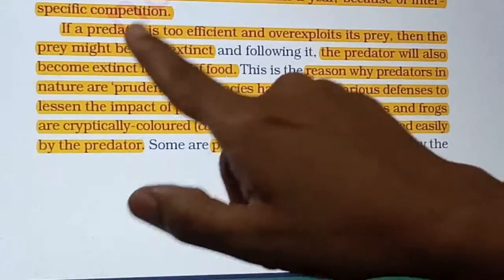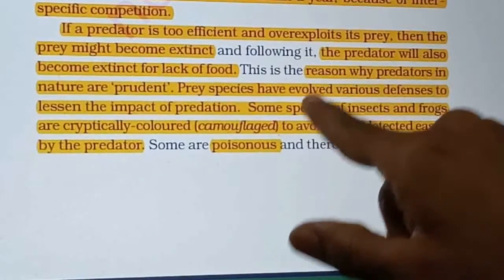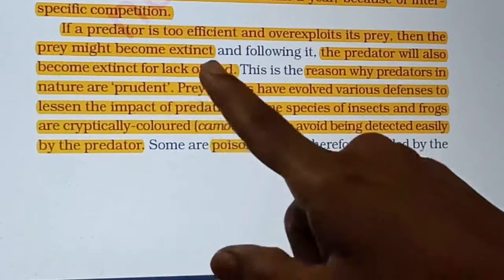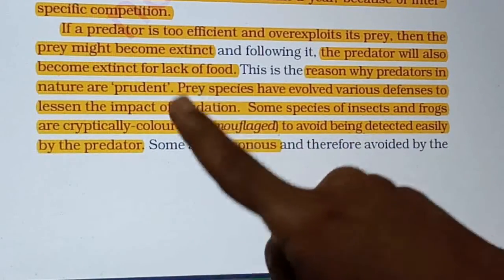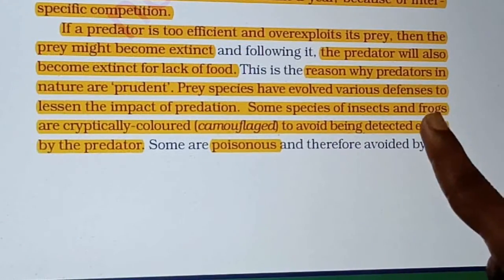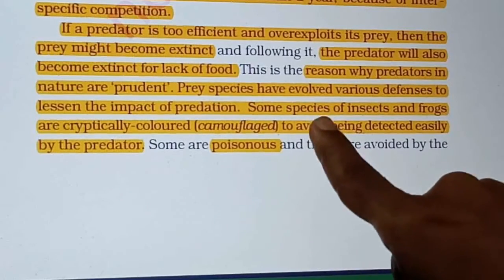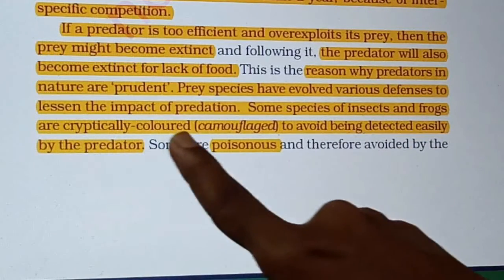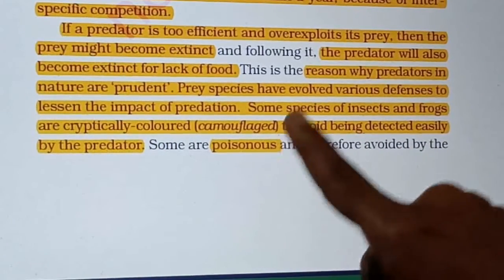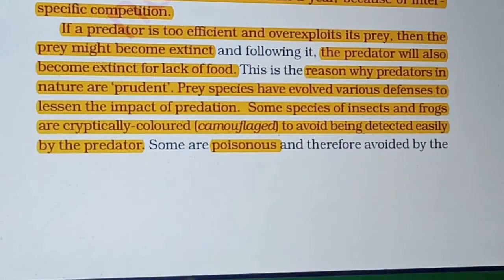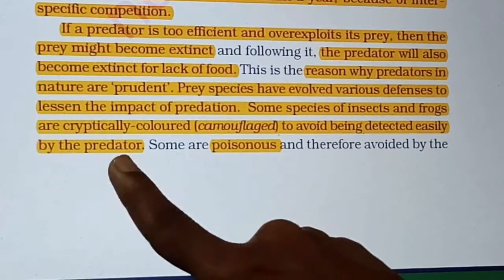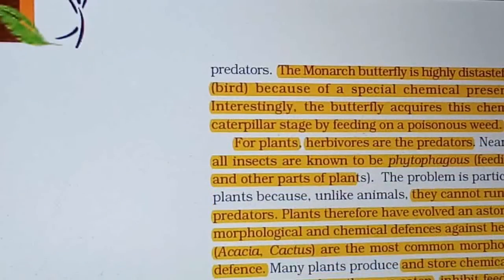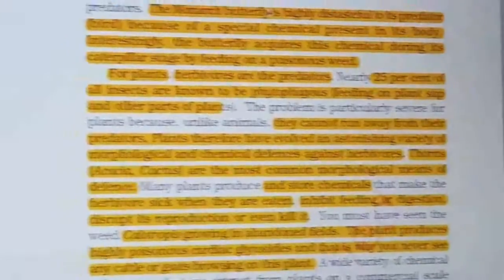To maintain their numbers, prey species have developed defensive mechanisms. Some insects and frogs are cryptically colored — they use camouflage to blend into the background and hide from predators. Some plants have become poisonous so that animals will not eat them.